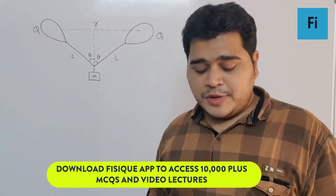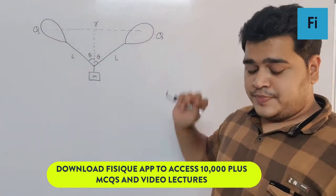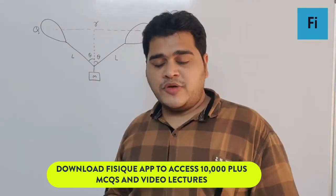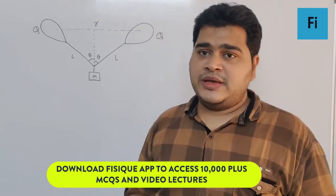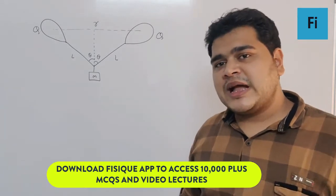If the amount of charge on the balloons is the same, so both have Q, then we want to find the magnitude of charge on each balloon - the Q value.